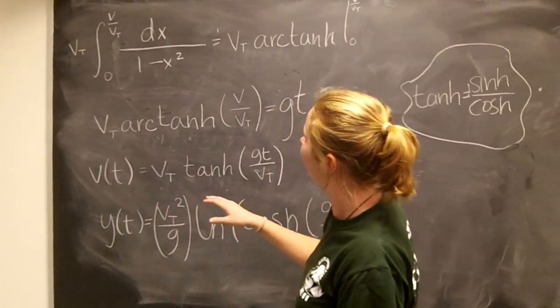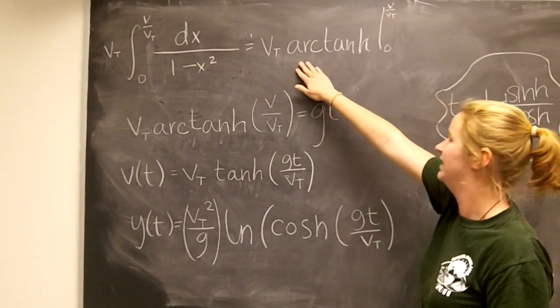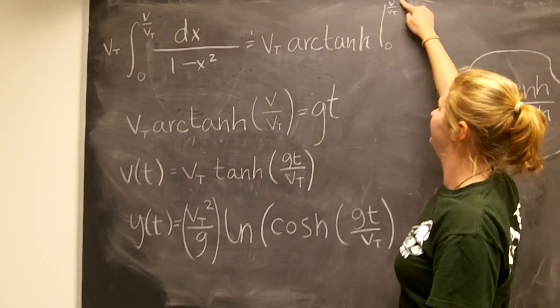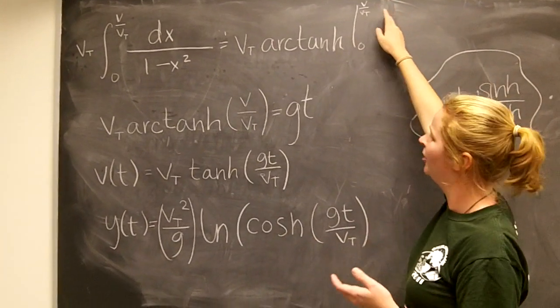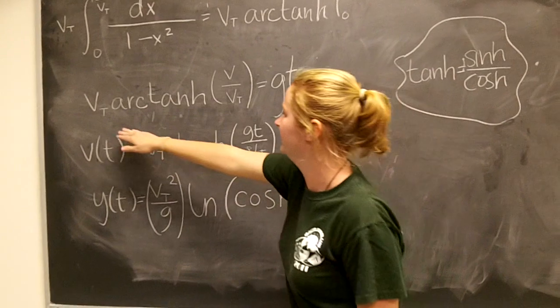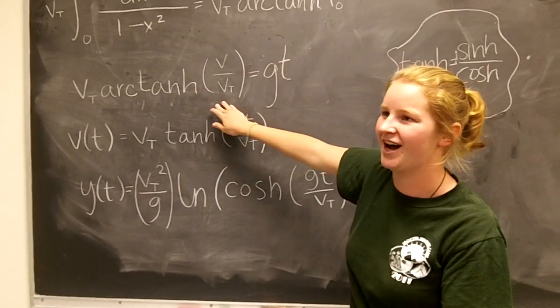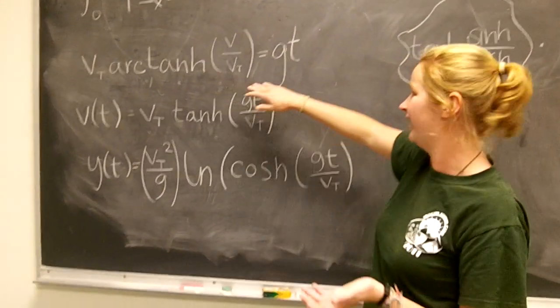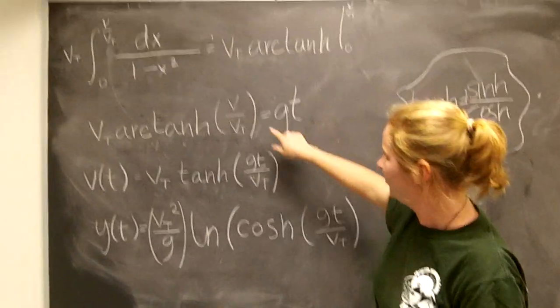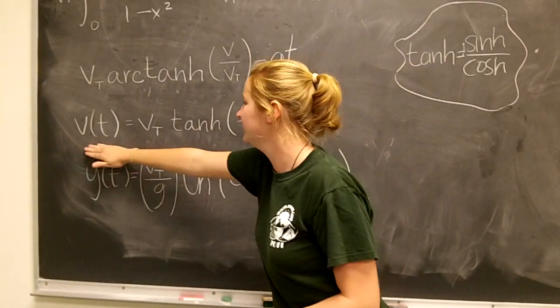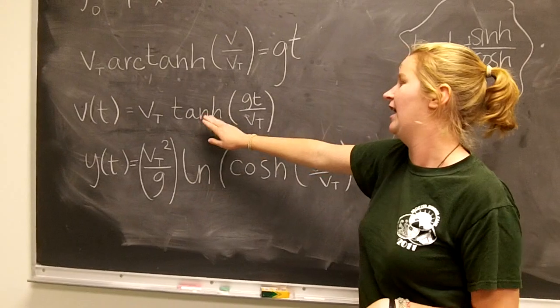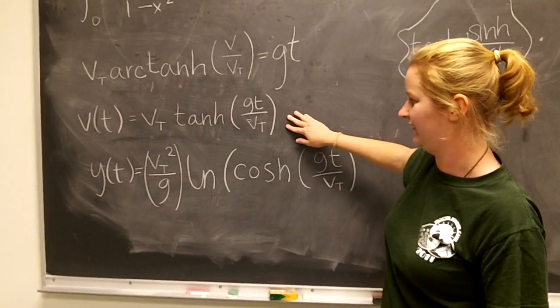So we have that this integral is equal to vt times arc tangent evaluated from zero to v over vt. So zero drops away, you get this. Just in case you've forgotten, this was equal to g dt. The integral, that's really easy, just becomes gt. So you can solve for your velocity, which is right here. And you get the equation v of t is equal to terminal velocity hyperbolic tangent of gt over terminal velocity.